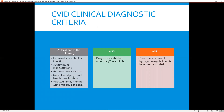Since common variable immunodeficiency is the most common primary immunodeficiency we see in adults, it's important to consider the diagnostic criteria. The incidence is about 1 in 25,000. The clinical diagnostic criteria require at least one of the following: increased susceptibility to infection, autoimmune manifestations, granulomatous disease, unexplained clonal lymphoproliferation, or an affected family member with known antibody deficiency. The patient must be well beyond the fourth year of life — not a problem for the group we're talking about today.